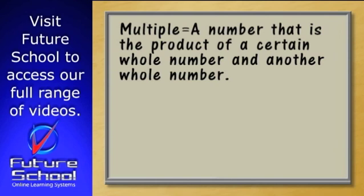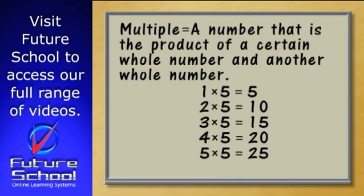A multiple is a number that is the product of a certain whole number and another whole number. For example, if we were looking for multiples of five, we could look at our five times table because all of the numbers down the right side are multiples of five.